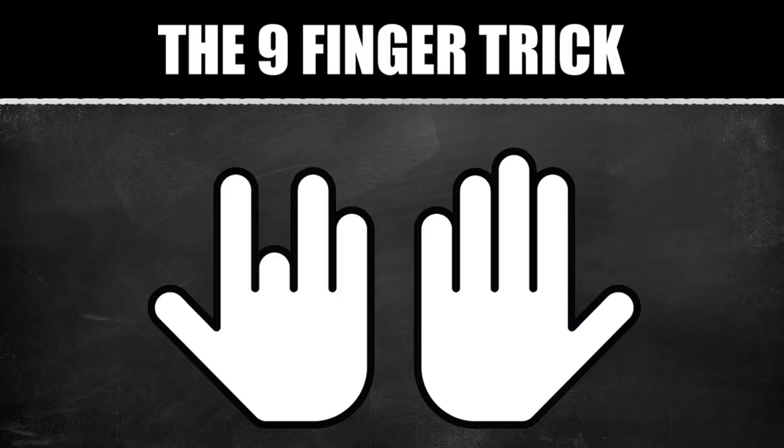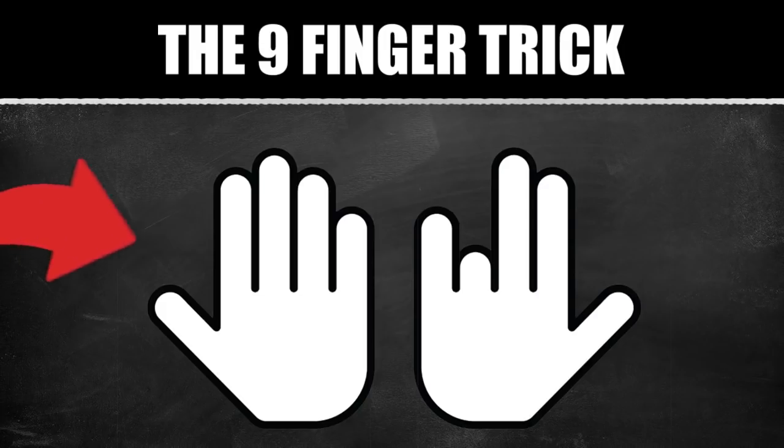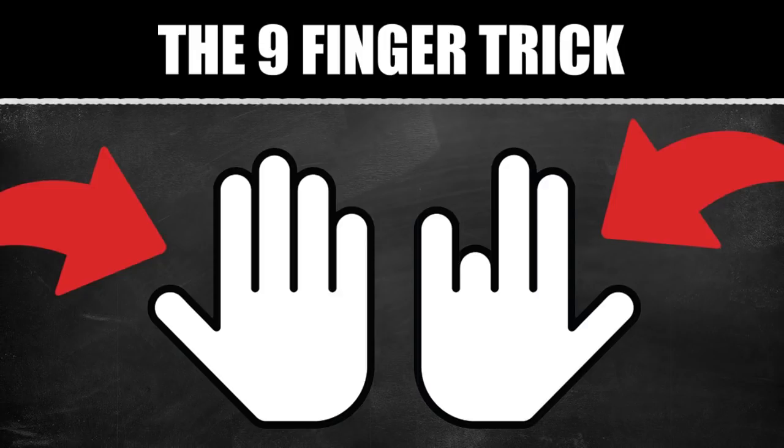Want another example? Put the 7th finger down and try to figure out 7 times 9. On the left you now have 6, so 60. And on the right 3, so 63 in total. 7 times 9 is 63. Pretty cool, huh?